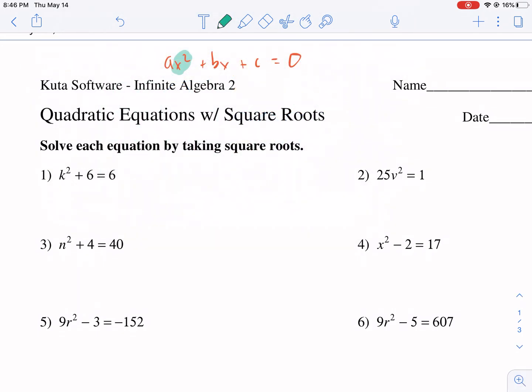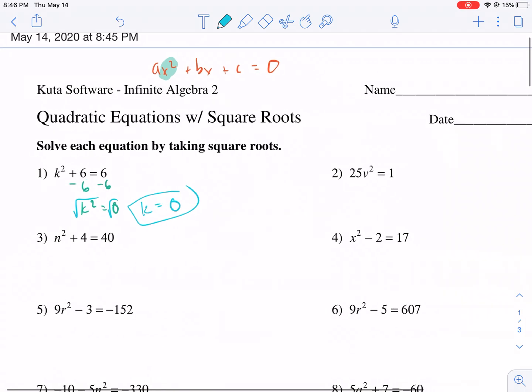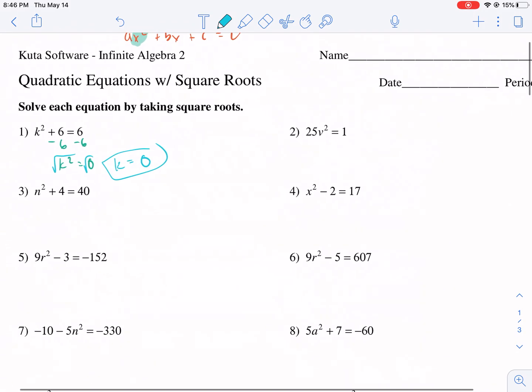So how do we do that? Let's look at number one. Here we have the K squared. We're trying to get them alone, so we're going to subtract 6 from both sides. We get K squared equals zero. We take the square root. Now this is where we take the square root because we want to undo the square. So if we undo the square, we get K by itself because the square root of K squared is K, and the square root of zero is just zero. That one's pretty simple.